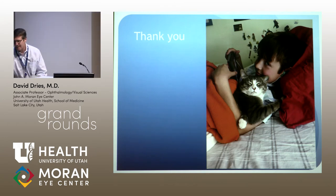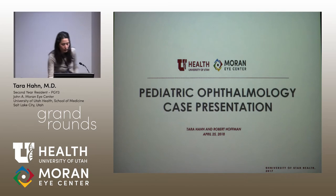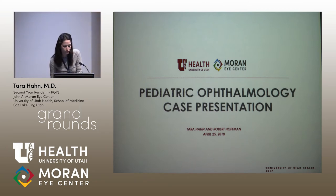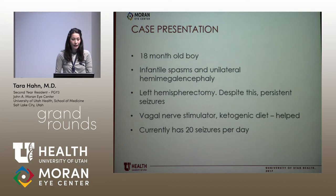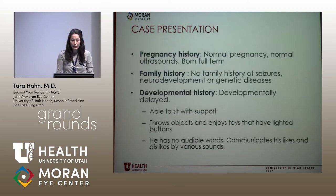Next, Tarahan — a resident currently on the pediatric ophthalmology rotation — will present our next patient, followed by some additional comments. This is an 18-month-old boy who at birth developed infantile spasms and was noted to have unilateral hemimegalencephaly, an enlargement of one cerebral hemisphere. He had a left hemispherectomy, but despite this he had persistent seizures. After a vagal nerve stimulator and the ketogenic diet, this helped, but he still has about 20 seizures per day, down from about 100 before. His mother had a normal pregnancy, normal ultrasounds, no known infections during pregnancy, and he was born full term.